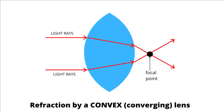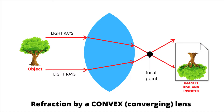A convex lens is thicker in the middle than at the edges. This causes rays of light to converge or to meet at a point. The light forms a real and inverted image depending on the distance of the object from the lens.